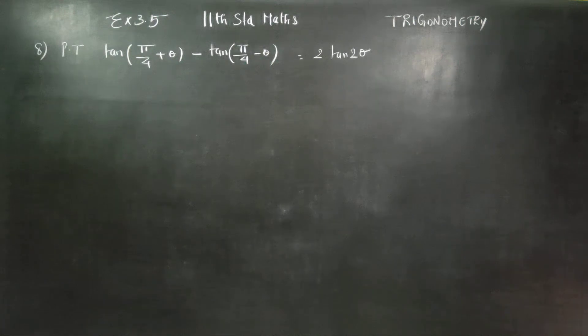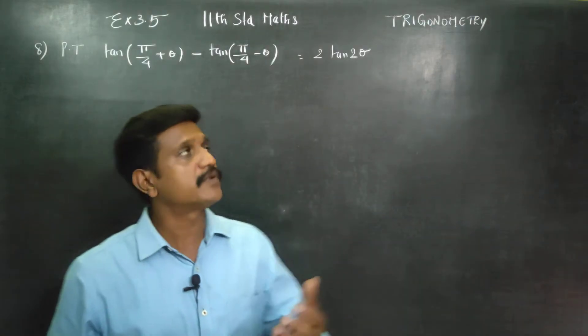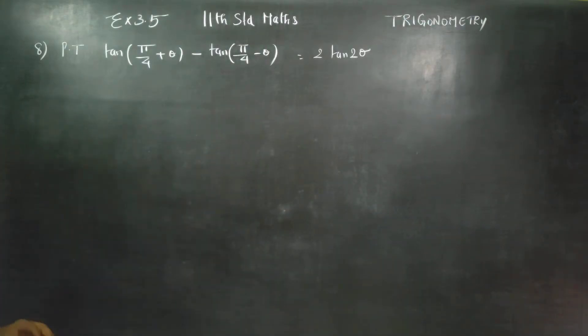Dear 11th standard students, in exercise number 3.5 sum number 8, prove that tan pi by 4 plus theta minus tan pi by 4 minus theta is equal to 2 tan 2 theta.